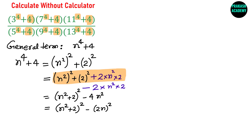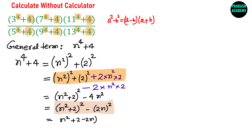Now 4n² can be written as (2n)². We can observe that (n² + 2)² − (2n)² is a difference of squares. Using the formula a² − b² = (a + b)(a − b), we get (n² + 2 − 2n) multiplied by (n² + 2 + 2n).